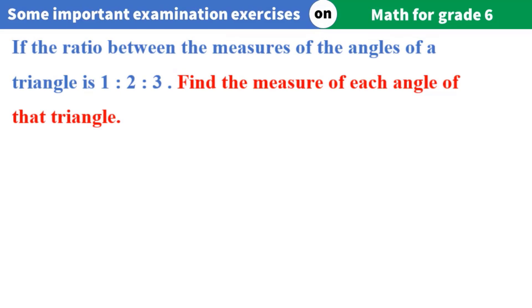If the ratio among the measures of the angles of a triangle is 1 to 2 to 3, find the measure of each angle of that triangle.